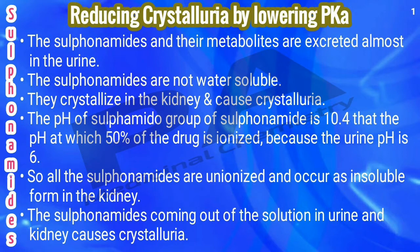Sulfonamides are excreted mostly in the urine and they are not water soluble, so they form crystals in the kidney — that is called crystalluria. The pH of the sulfamido group of sulfonamides is 10.4, whereas the urine pH is 6. At urine pH 6, only 50% of the drug is ionized, so sulfonamides remain largely unionized and occur in insoluble form in the kidney, causing crystalluria.